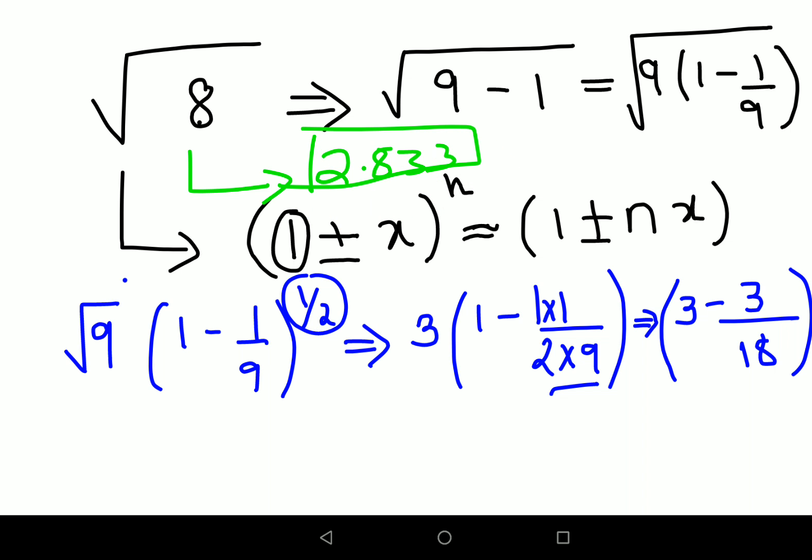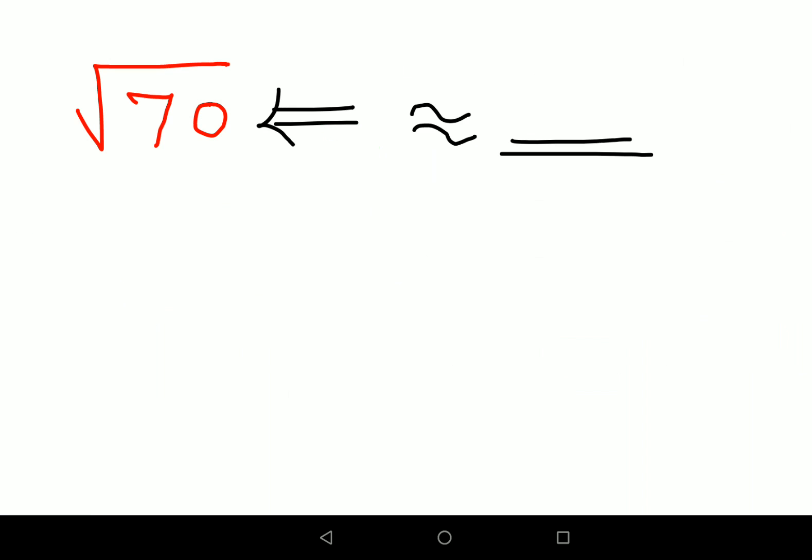All you have to remember is this particular value, this particular representation is super important for anyone who's trying to find the square root of an imperfect square. So now let's go and do this. What we'll do over here is again we will try to write everything in terms of (1 ± x) raised to n.